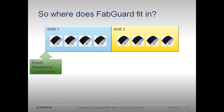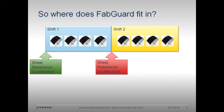When thinking about this from an FDC perspective, the RTP sheet resistance qualification is typically providing shift-by-shift fault detection. What happens if there's a fault right after the qualification is performed? Then 12 hours of processed wafers are at risk for scrap before the problem can be detected at the next qualification.